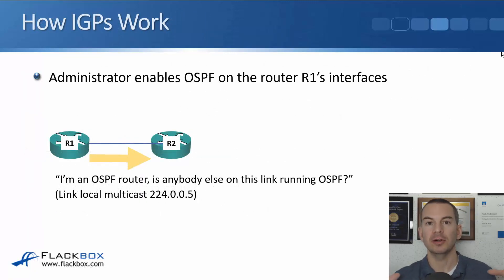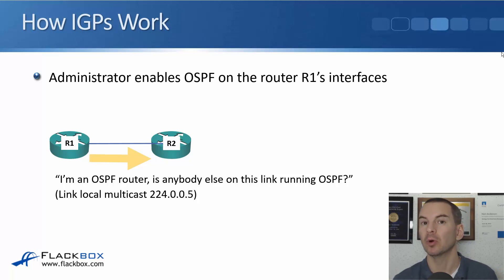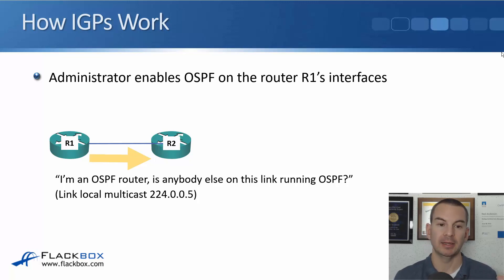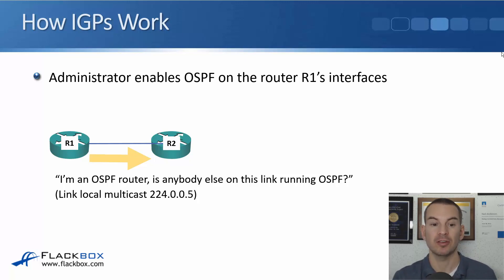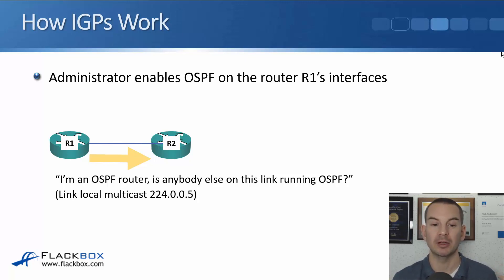Let's have a quick recap of how IGPs like OSPF and ISIS work, because we're going to compare this to how BGP works later. Within an IGP such as OSPF, the administrator enables OSPF on router R1's interfaces and R1 will start sending out link-local multicast addresses looking for other OSPF routers to form an adjacency with. R1 sends out an OSPF link-local multicast hello saying 'I'm an OSPF router, is there anybody else on this link running OSPF?' — and for OSPF that goes out on multicast address 224.0.0.5.